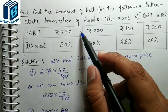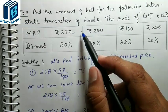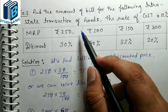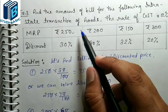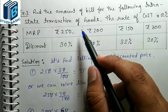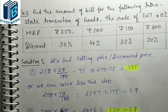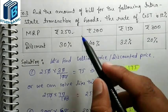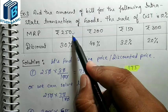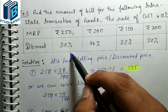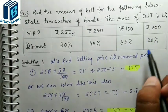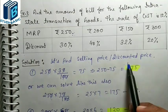The items are: Rs. 250 with 30% discount, Rs. 240 with 40% discount, Rs. 150 with 32% discount, and Rs. 300 with 20% discount. We need the selling price because GST is never applied on MRP when a discount is given — for example, a phone with MRP Rs. 25,000 selling for Rs. 12,000 means GST applies only on the discounted selling price.